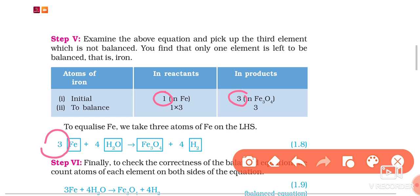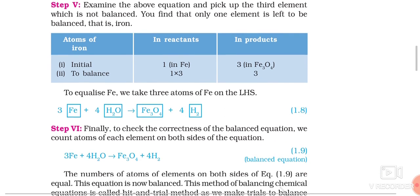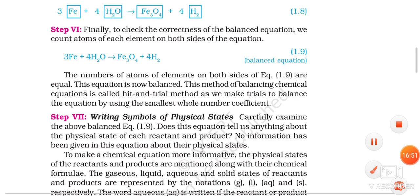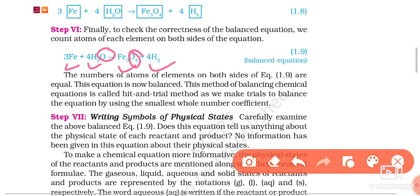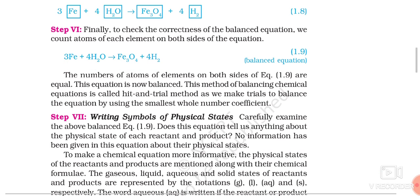Finally, we check the correctness of the balanced equation by counting atoms of all elements on both sides: 3 iron atoms on left and 3 on right; 8 hydrogen atoms on left and 8 on right; 4 oxygen atoms on left and 4 on right. The chemical equation is now balanced. Dear students, learn all these steps, follow them, read your NCERT book, and practice.